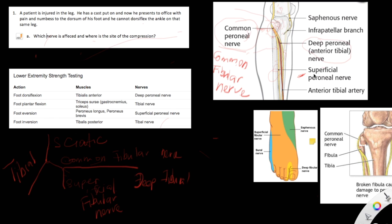The patient presents with neurodeficits of both the superficial fibular nerve and the deep fibular nerve. Both of these are branches of the common fibular nerve. So if there's a lesion at the level of the common fibular nerve, it would affect both the superficial fibular nerve, causing pain and numbness to the dorsum of the foot, and the deep fibular nerve, causing the inability to dorsiflex the ankle.